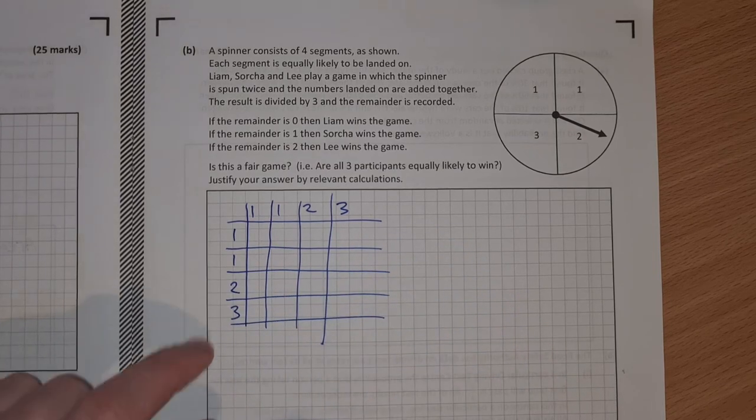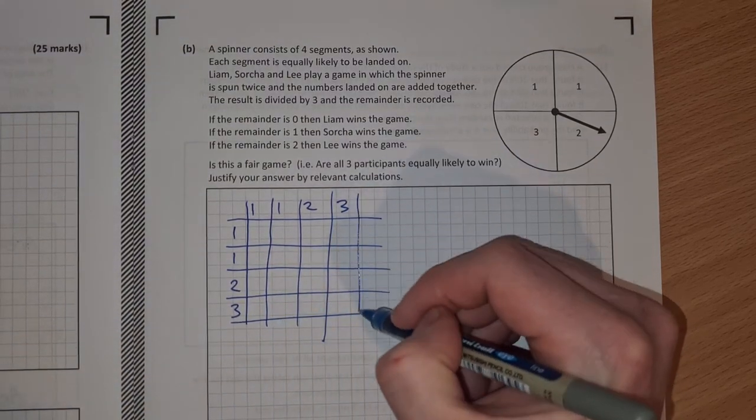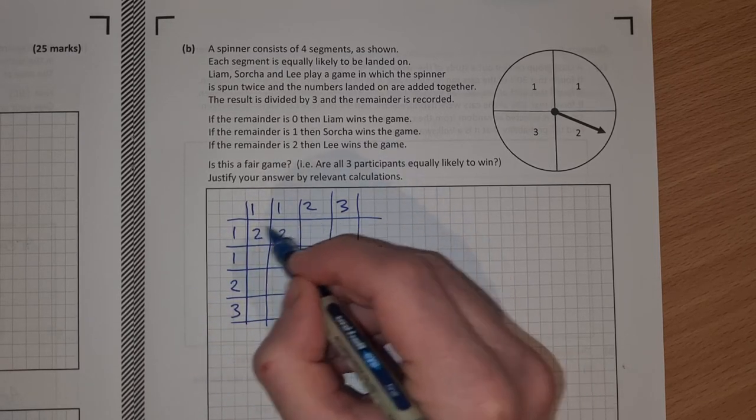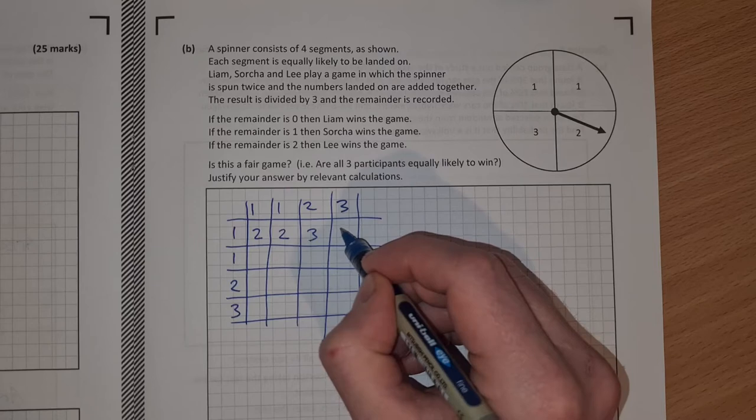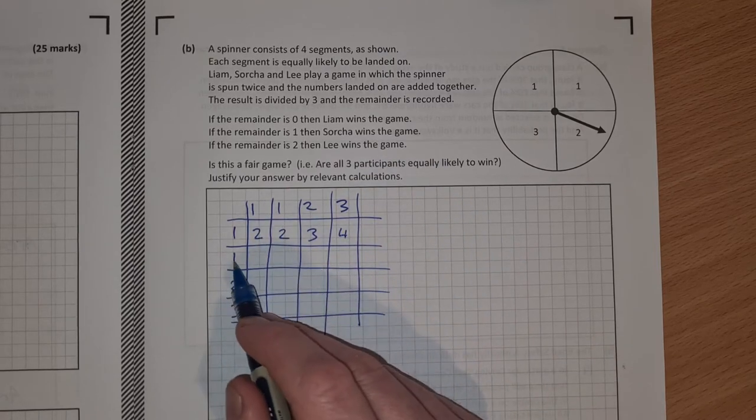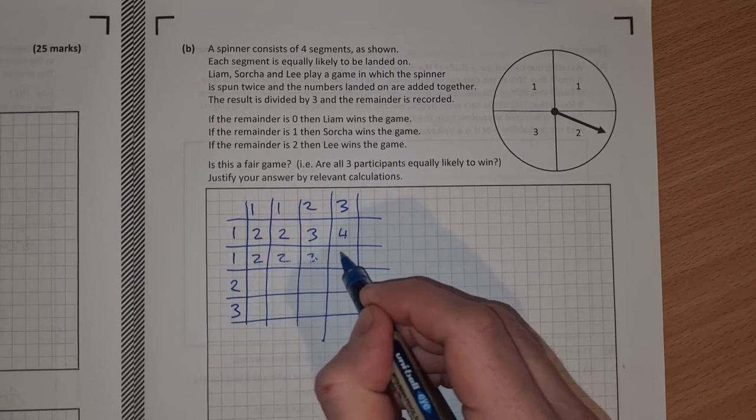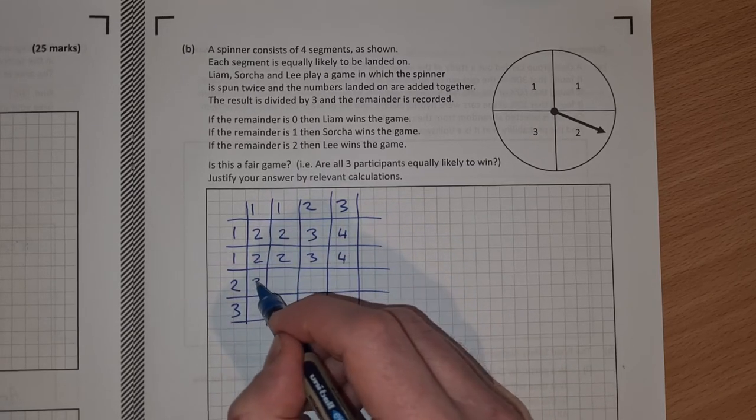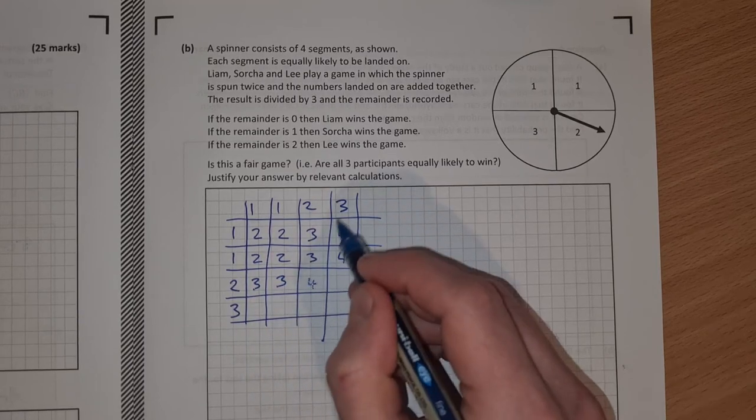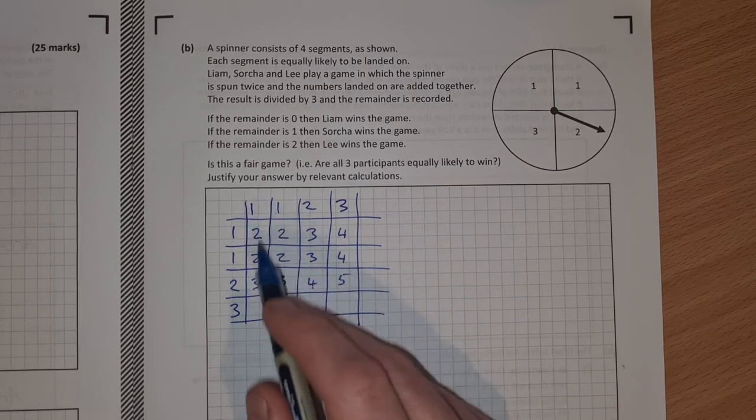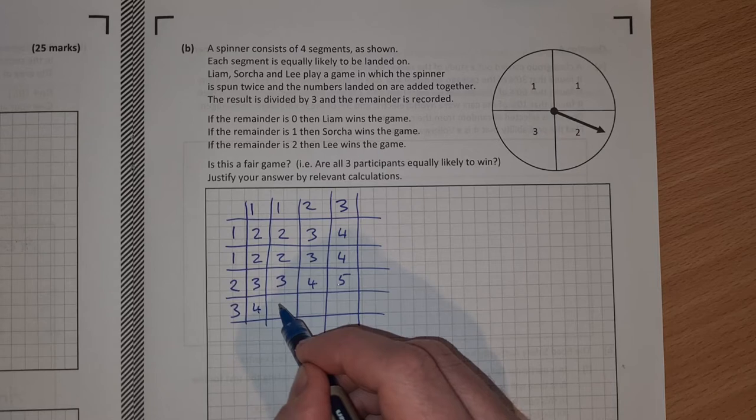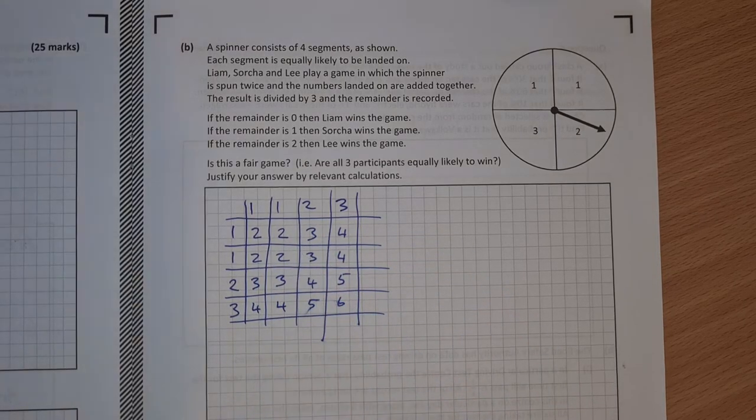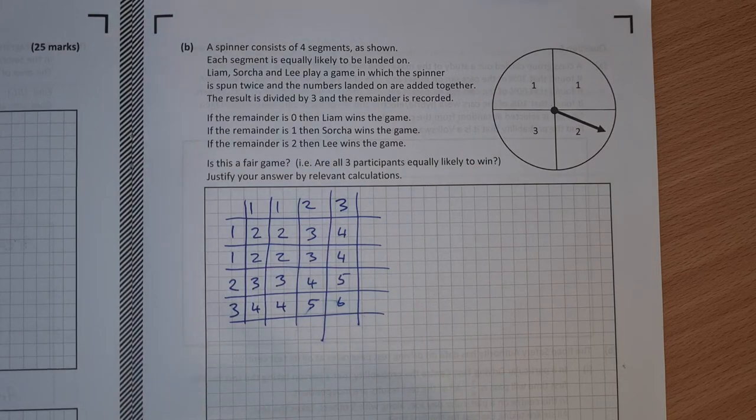Now, what I'm going to do is I'm going to add together each of the bits in here. So 1 plus 1 is 2, 1 and 1 is 2, 2 and 1 is 3, 3 and 1 is 4. Then onto this one we have the same, we're adding 1 again. So 2, 2, 3, 4. Now we're adding 2 to each of these. So 1 and 2 is 3, 3, 2 and 2 is 4, 3 and 2 is 5. And then 1 and 3 is 4, 4, 5 and 6. So this is the table of results of the numbers added together.